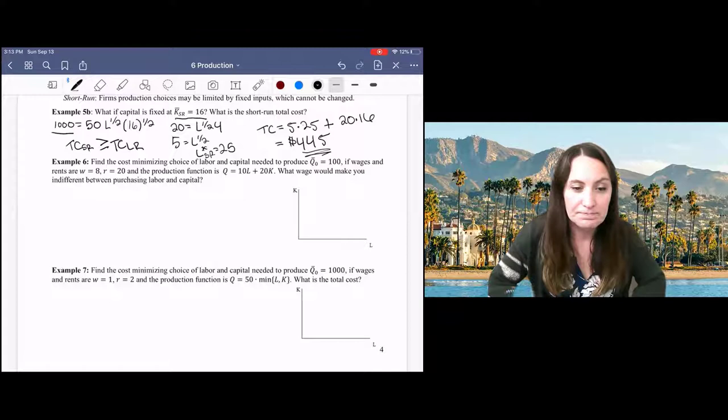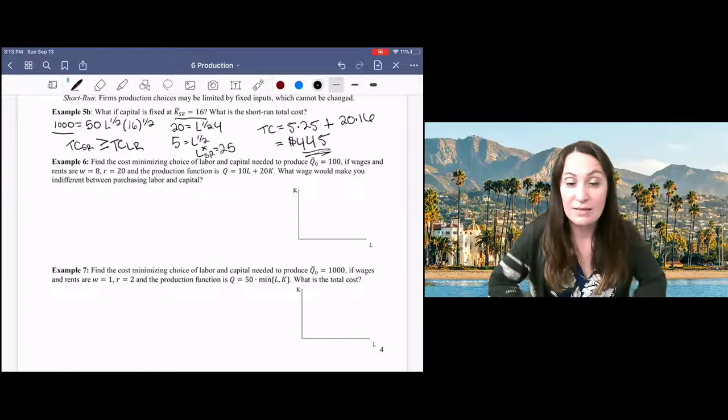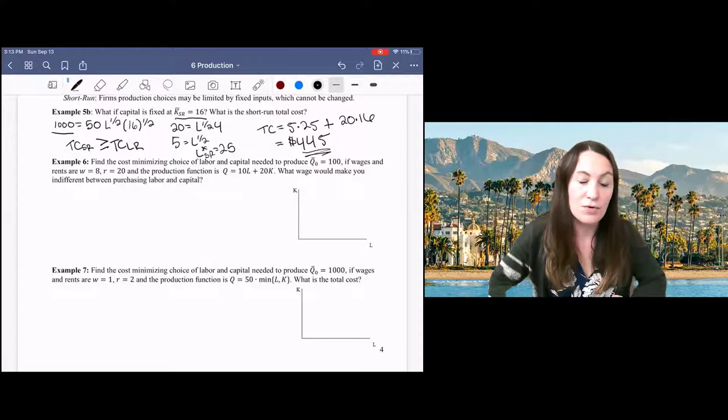So remember that we're going to have a corner solution here because the slope of our iso-quant curve will be constant. Our marginal technical rate of substitution is constant, and so we're not going to have a tangency between the iso-cost and iso-quant curves.